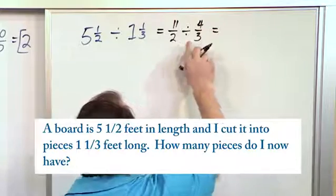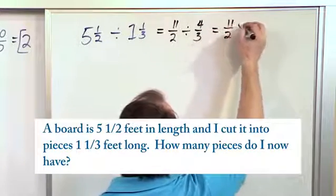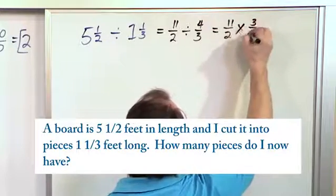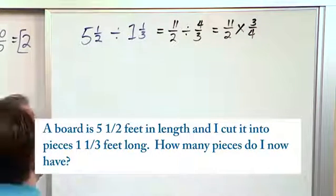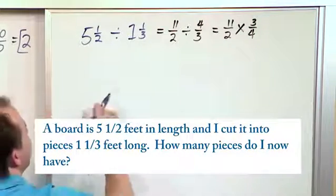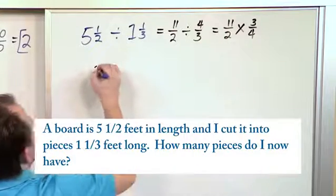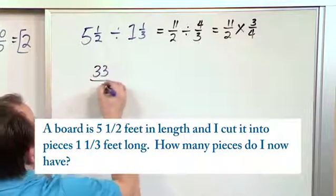Now we change this to multiplication: 11/2 times—we flip this over—3/4. So we can now do the multiplication on top: eleven times three is thirty-three. And on the bottom, two times four is eight, giving us 33/8.